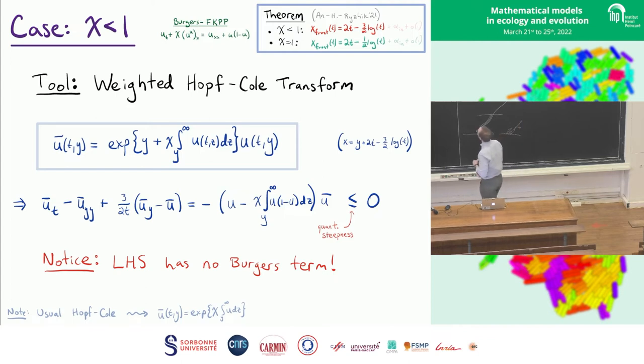And if you compute what equation U bar satisfies, the left-hand side has no Burgers terms. Chi doesn't show up there at all. The middle term that it's equal to, you see that chi showing up. But if you use that inequality I showed you on the last slide from the quantitative steepness, you get that right-hand side actually, well, the thing in parentheses is positive, so the whole thing is going to be negative. Why is this nice? Now U bar basically has no relation to Burgers at all anymore.